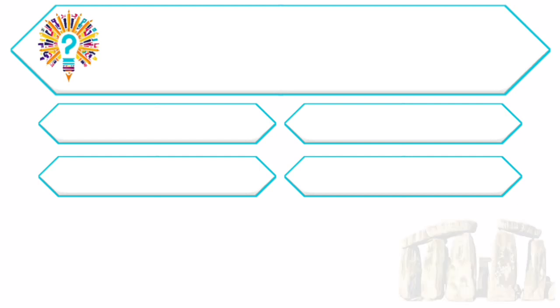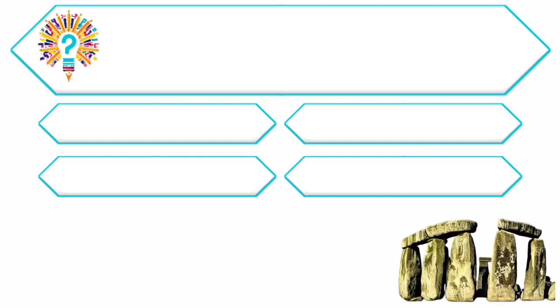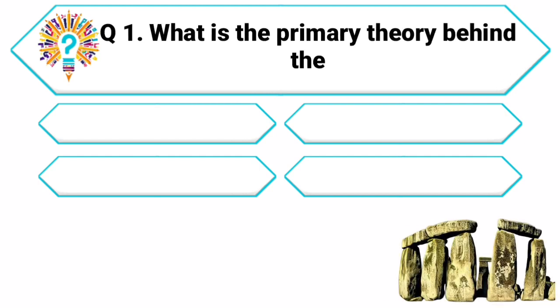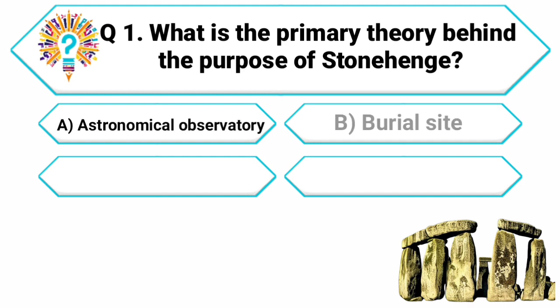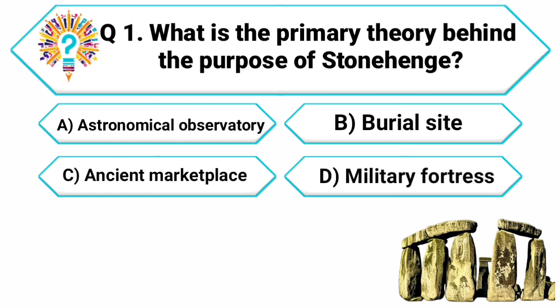Question 1. Our first stop is the enigmatic Stonehenge. What is the primary theory behind the purpose of Stonehenge? Your options are: A. Astronomical Observatory, B. Burial Site, C. Ancient Marketplace, D. Military Fortress.